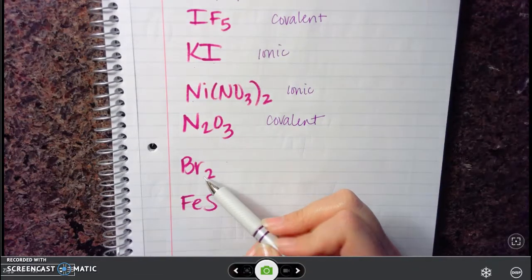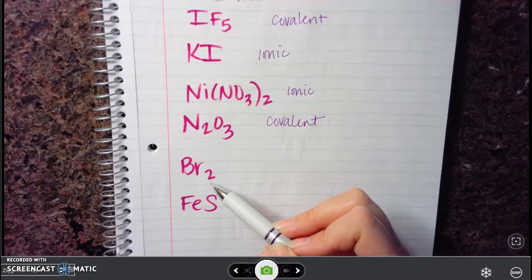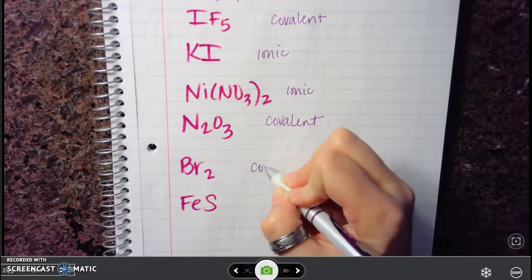Br2. This one's only made up of bromine, but there's actually two bromines present. So because there's two bromines present, that is two non-metals. So this one is covalent as well.